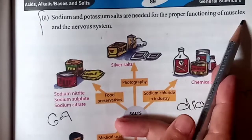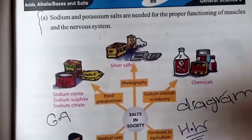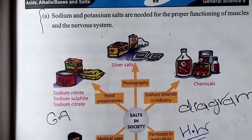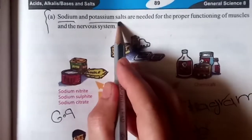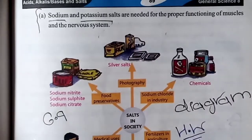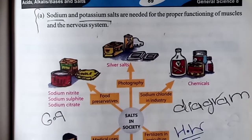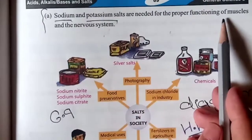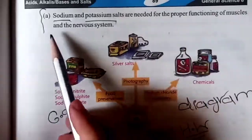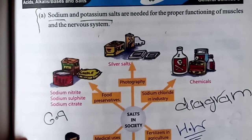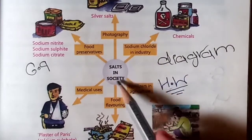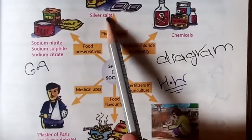First, sodium and potassium salts are needed for the proper functioning of muscles and the nervous system. What is the main role of sodium and potassium? For the proper functioning of the nervous system and muscles in the whole body, we need these salts.